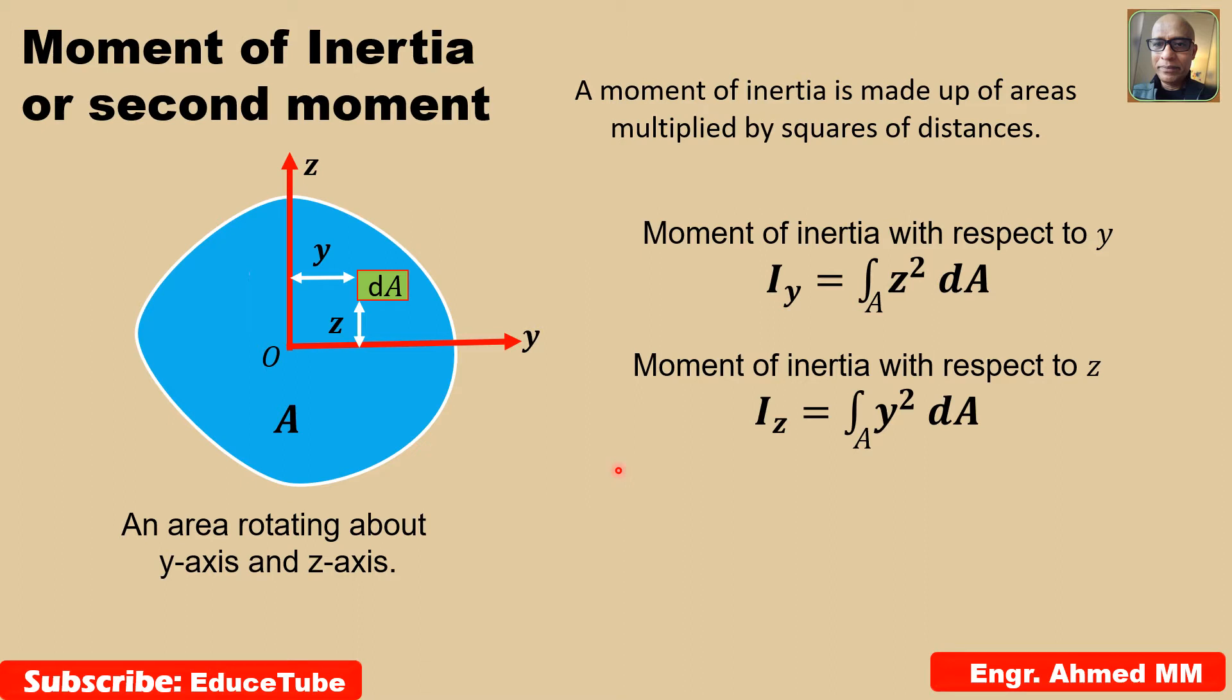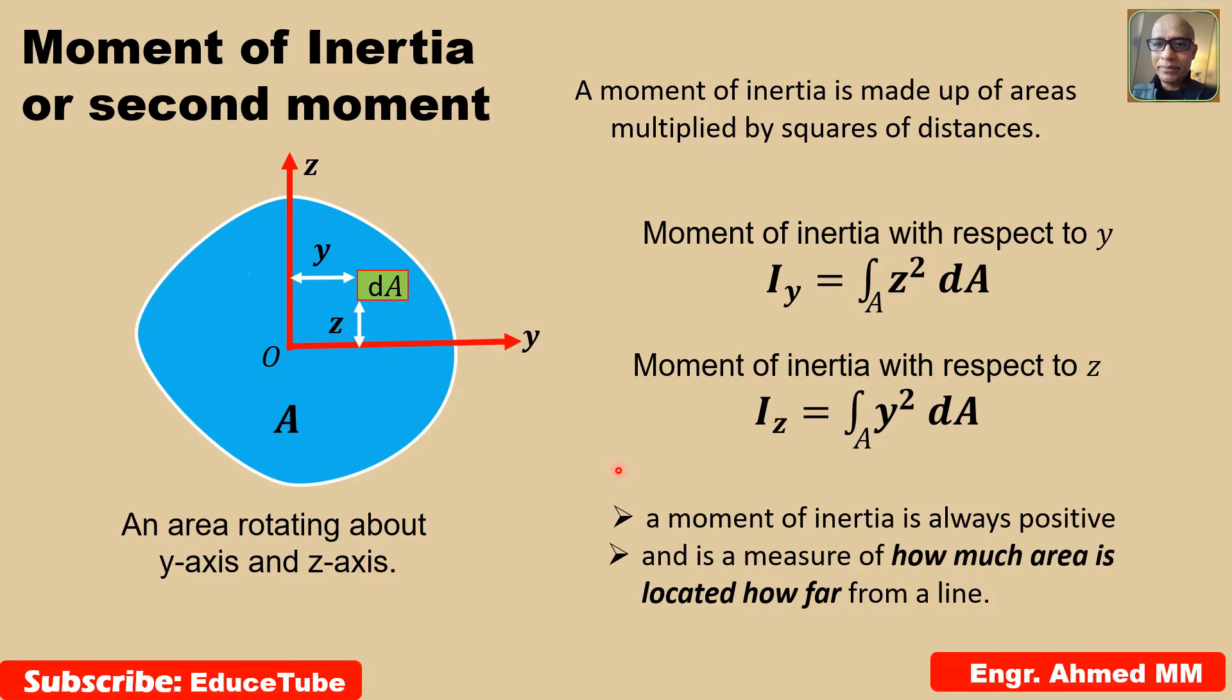I want to tell about two properties. One is very important that a moment of inertia is always positive. And it is a measure of how much area is located, how far from a line. Very simple concept.